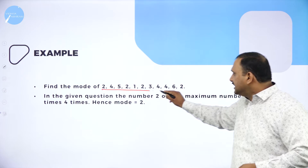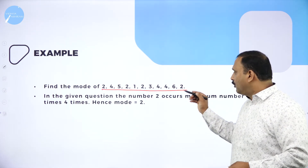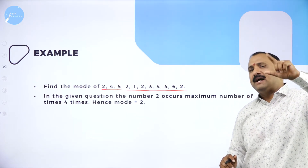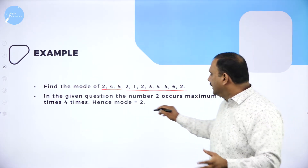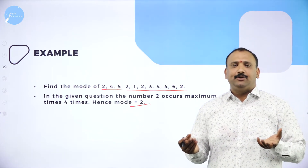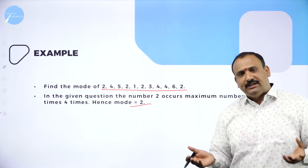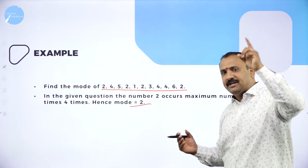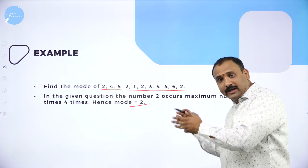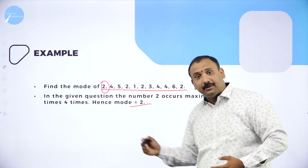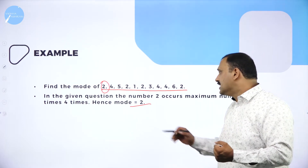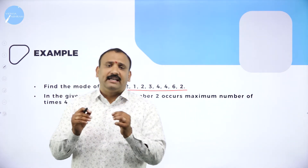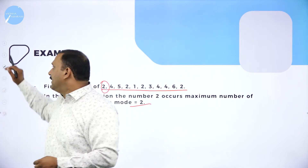Here is a simple example: look at the series 2, 4, 5, 2, 1, 2, 3, 4, 4, 6, 2. The number 2 is the variable repeated the maximum number of times, so mode = 2. It's like verbal mathematics — easy to score. All you have to check is which variable has been repeated the maximum number of times. It's quite obvious from the data: mode = 2.